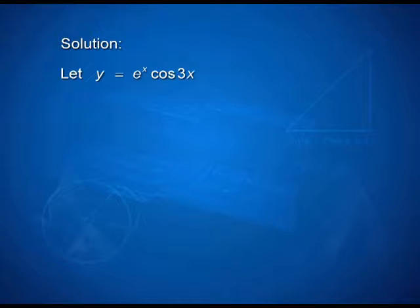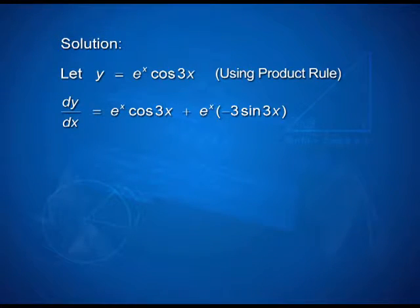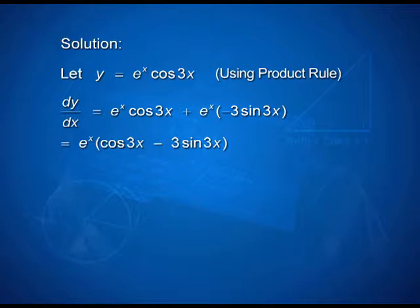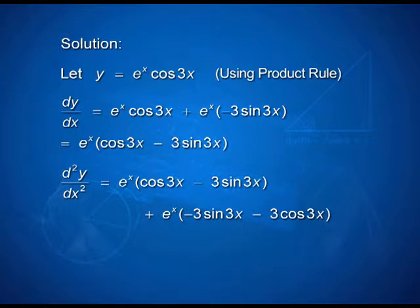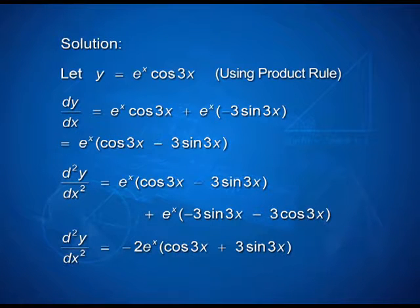What happens if I have y = eˣ cos 3x? Using the product rule, the first derivative is eˣ cos 3x + eˣ(−3 sin 3x), which I may write as eˣ(cos 3x − 3 sin 3x). Now differentiating again, I need to be careful to apply the product rule. I differentiate eˣ keeping the second term as is, and in the second term I differentiate (cos 3x − 3 sin 3x) keeping eˣ as it was. Then simplify to get the final answer.